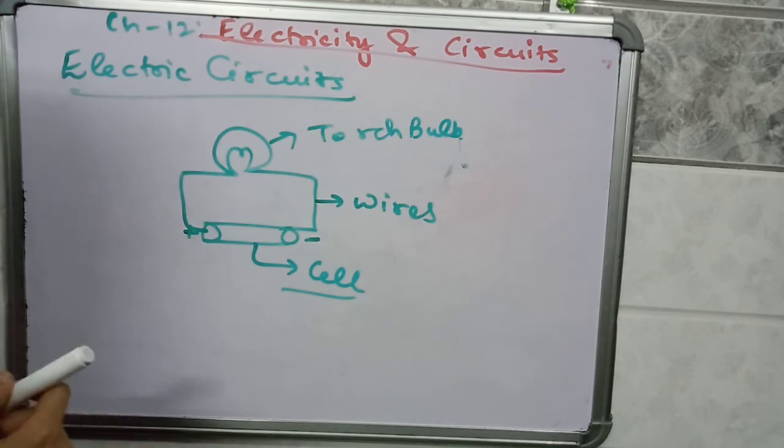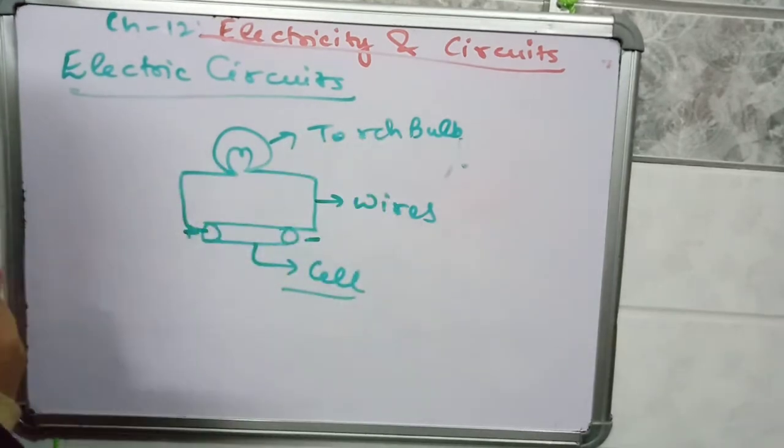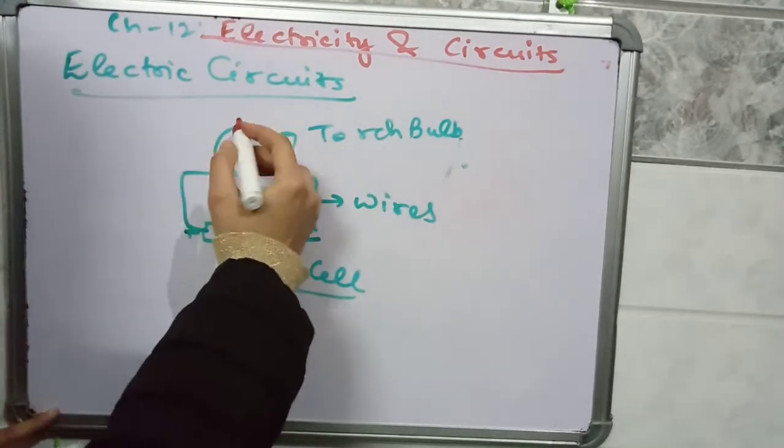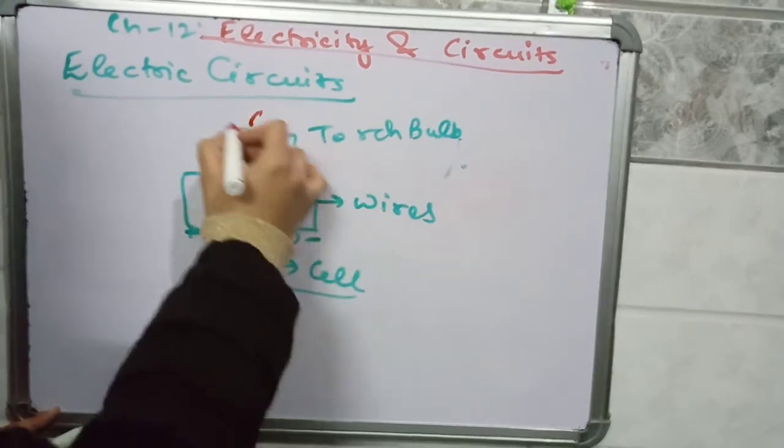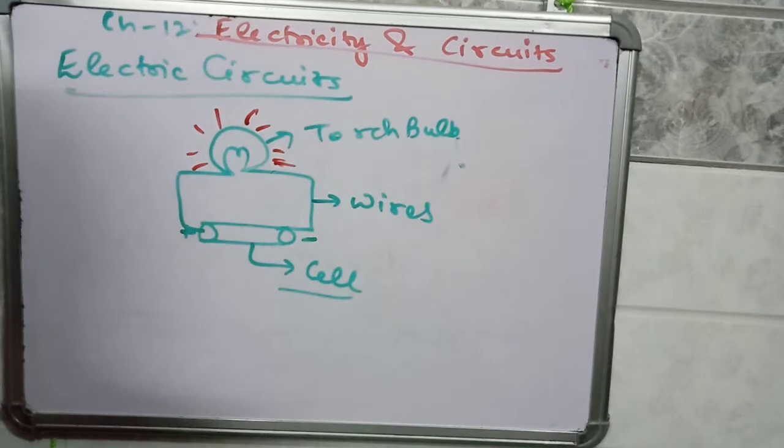So we have connected a cell with the help of wires to a torch bulb. As soon as the connection is made, the torch bulb will start glowing. It will start emitting light.